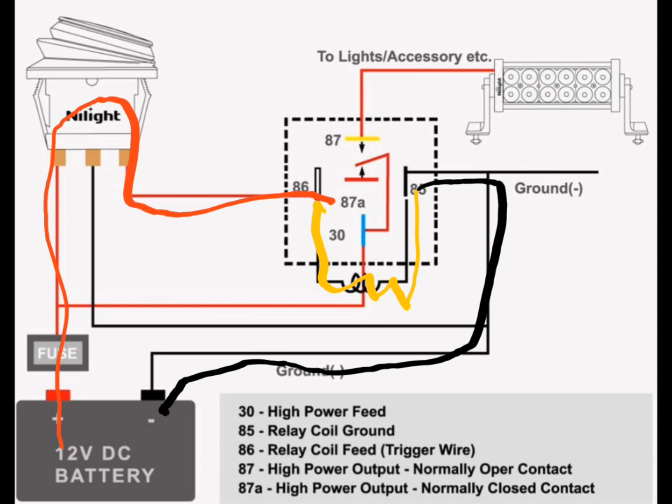It then is going to switch between 87 and 87a, because a relay schematic shows everything in the non-energized state, and that's why we hook our light up to 87. When the coil turns on from the switch powering it, it's going to change positions from 87a to 87.